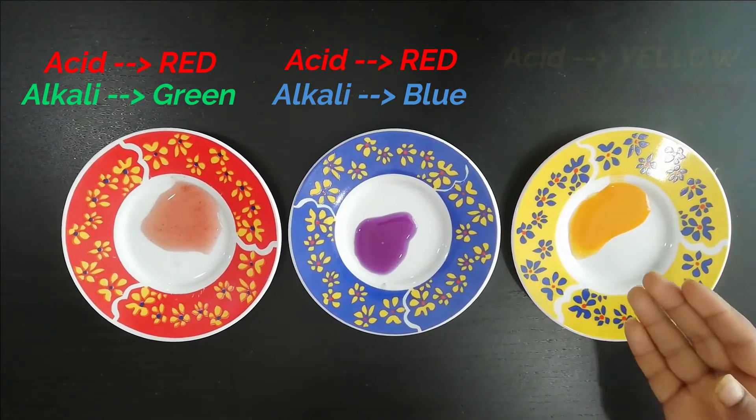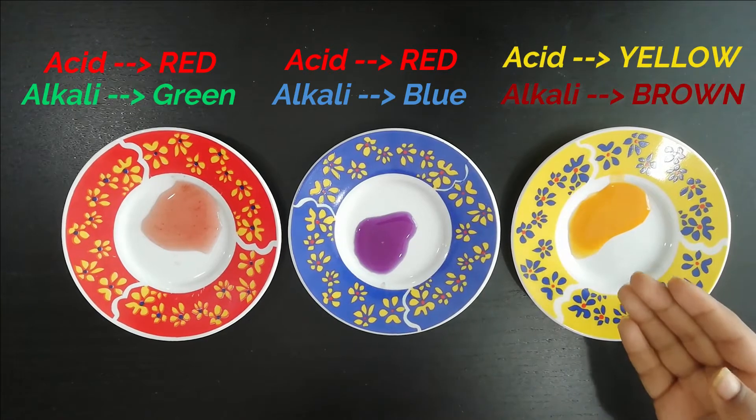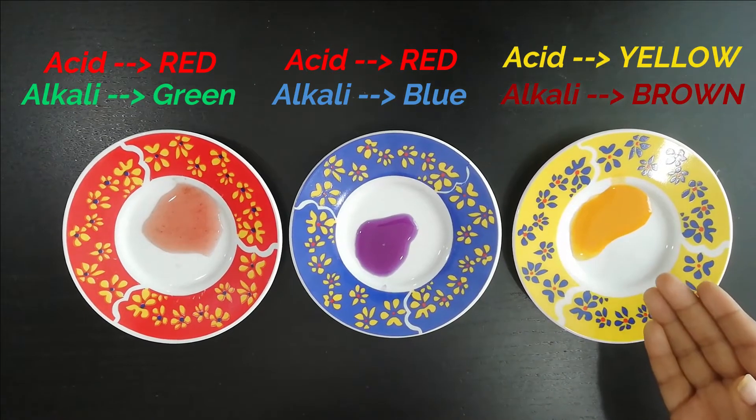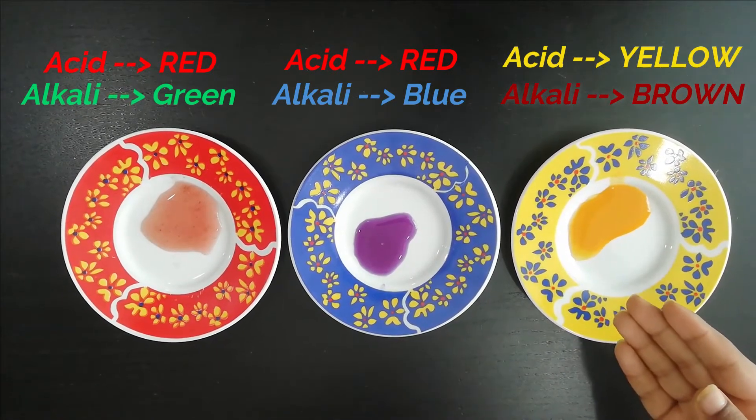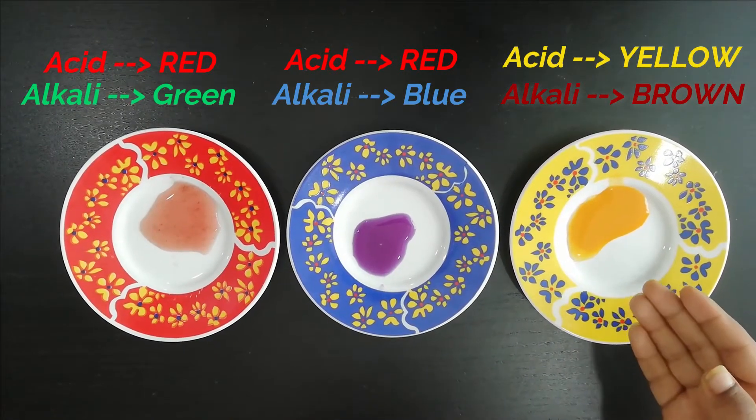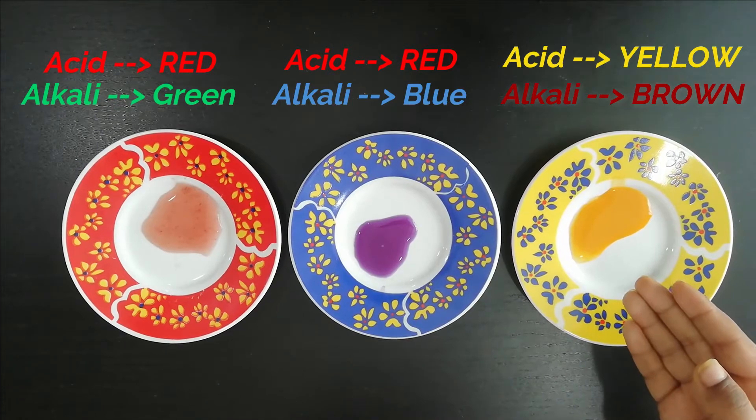The yellow colour of turmeric water remains the same for acid products, and it changes into brown for alkaline products.